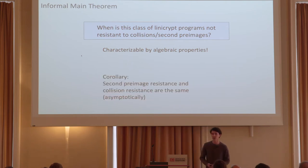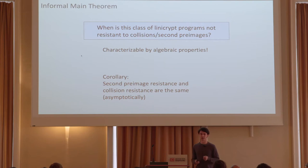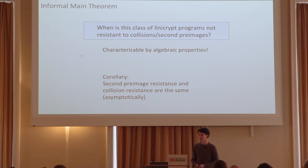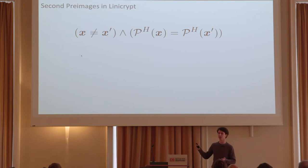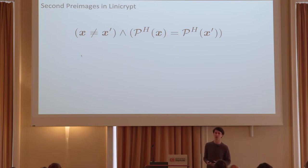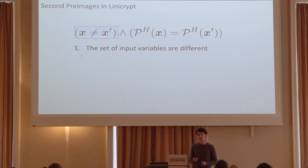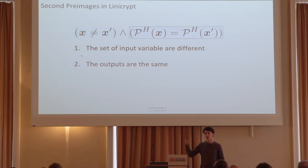Although our paper produces concrete bounds that differ between second pre-images and collisions as we'd expect, asymptotically speaking the two are equivalent for these programs. Before we get into the details: what do we mean by second pre-images or collisions in lineecrypt? It's exactly as expected — given some output from a linear program and the pre-image that generates it, an adversary provides a different set of inputs such that running through the program gives the same output.